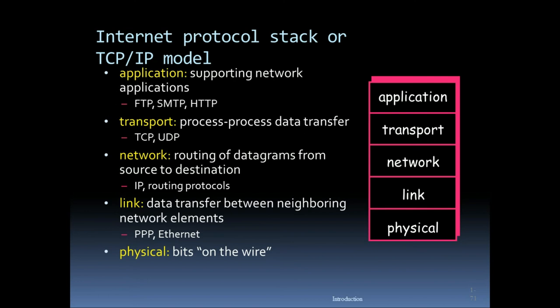The link layer handles data transfer between neighboring network elements. The physical layer deals with bits on the wire.